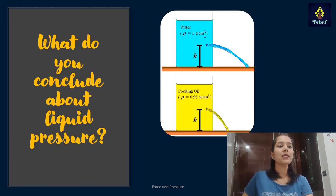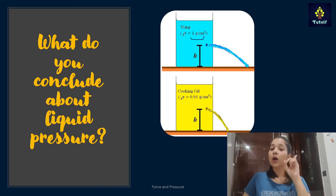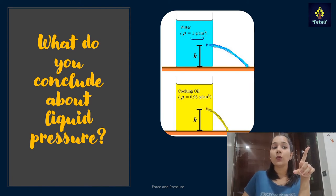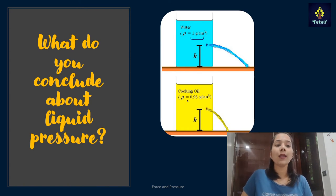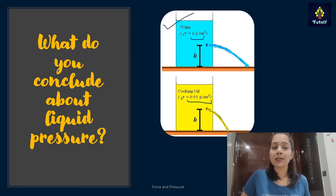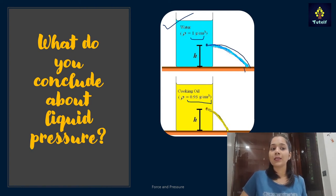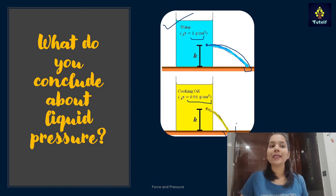Next, one beaker has water and the other has cooking oil. The density of water is 1 gram per centimeter cube — earlier in the simulation it showed 1000 kg per meter cube because SI units were used. Cooking oil has a density of 0.93 grams per centimeter cube. Since water has greater density, its liquid pressure is more — the distance covered by the water jet is more than that covered by the cooking oil. So as density increases, liquid pressure increases.